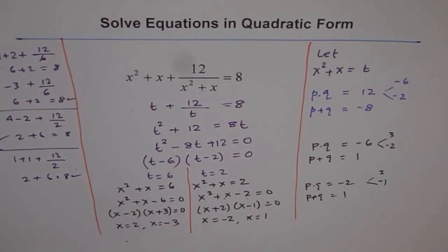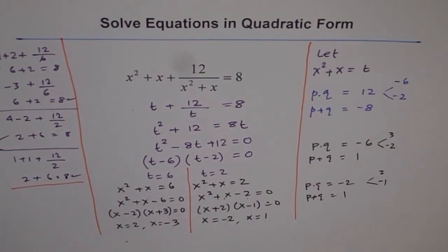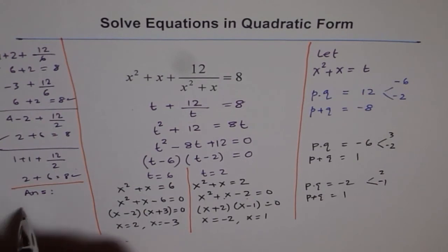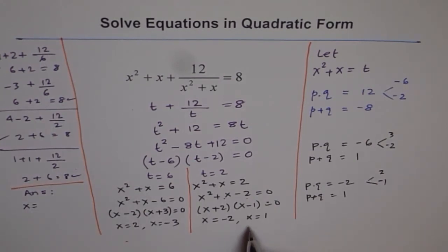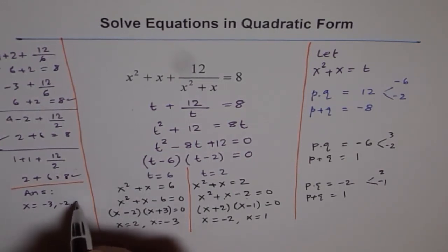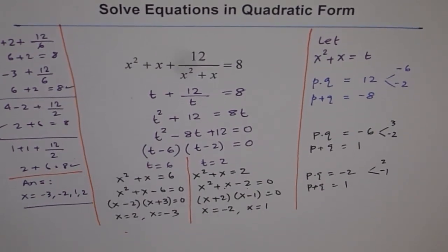Therefore, the solution of the given equation is x equals minus 3, minus 2, 1, and 2. It is always good to write them in a particular order. That is the complete solution. Have a good look at it. Thank you.